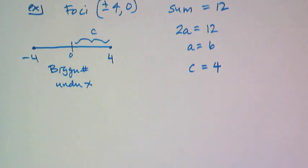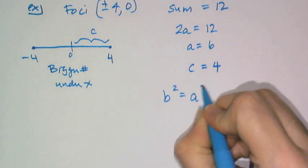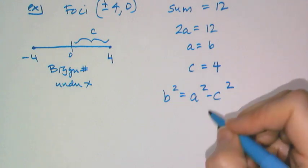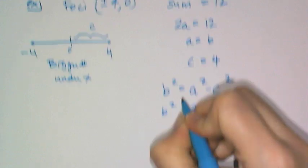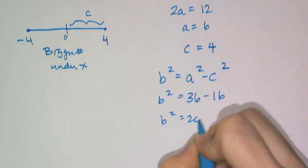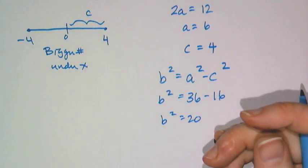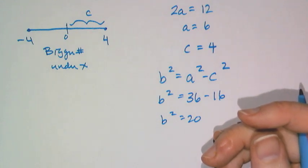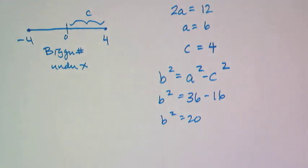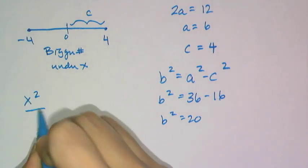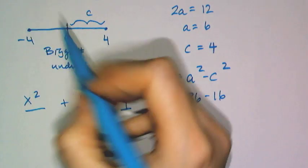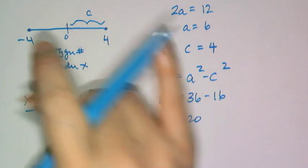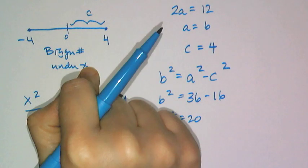Using the fundamental relationship for an ellipse, b squared equals a squared minus c squared. Plugging in what I know: b squared equals 36 minus 16, so b squared equals 20. I don't need to simplify the radical further since I only need the equation, not the length of the minor axis.